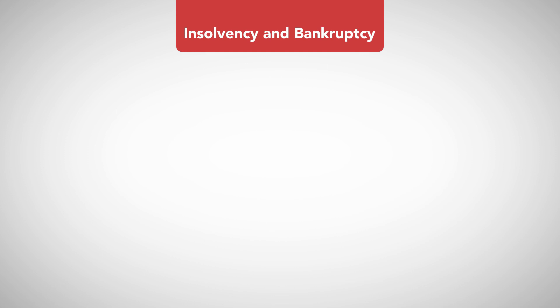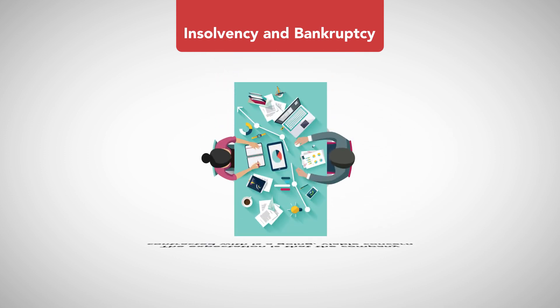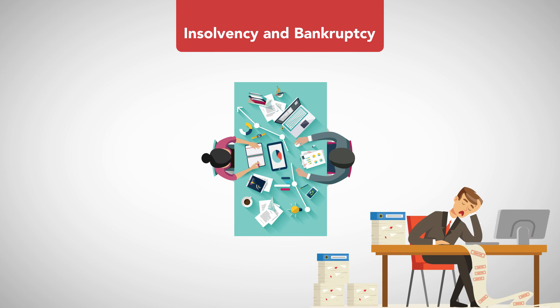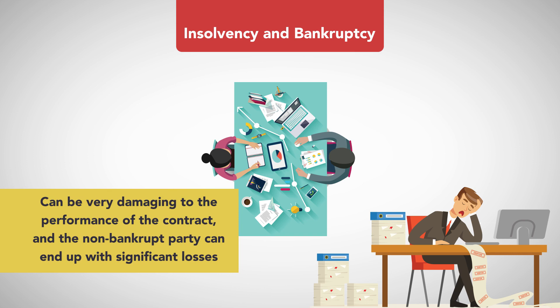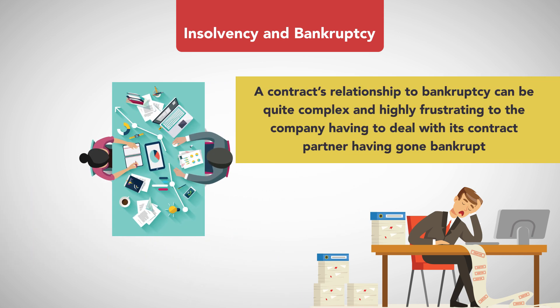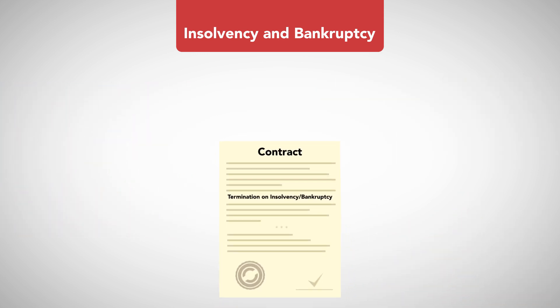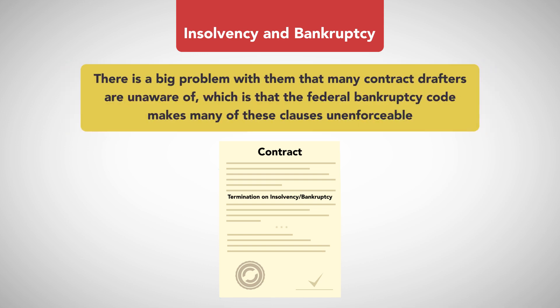Insolvency and Bankruptcy. When one company enters into a contract with another, the expectation is that the company contracted with is a going viable concern. Entering into a contract with a company that then becomes insolvent and/or takes bankruptcy can be very damaging to the performance of the contract, and the non-bankrupt party can end up with significant losses. A contract's relationship to bankruptcy can be quite complex and highly frustrating to the company having to deal with its contract partner having gone bankrupt. Therefore, termination on insolvency/bankruptcy clauses are quite common, but there is a big problem with them that many contract drafters are unaware of, which is that the federal bankruptcy code makes many of these clauses unenforceable.